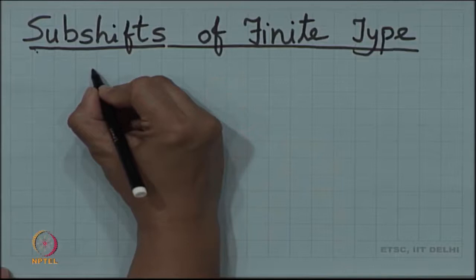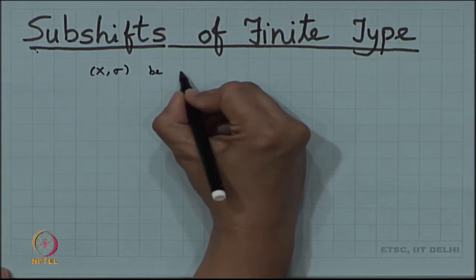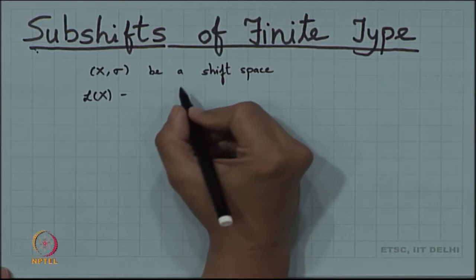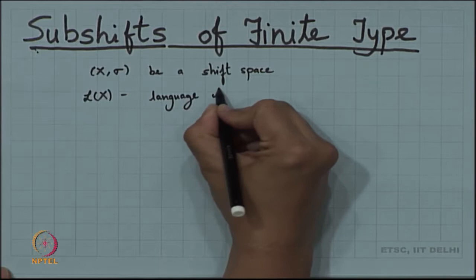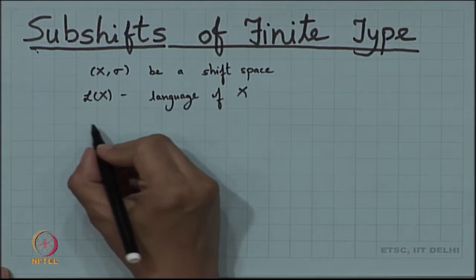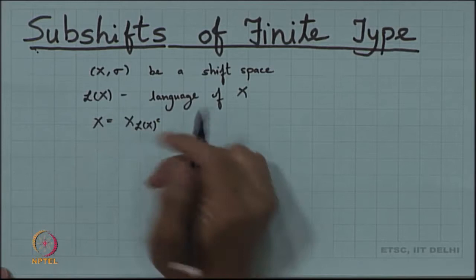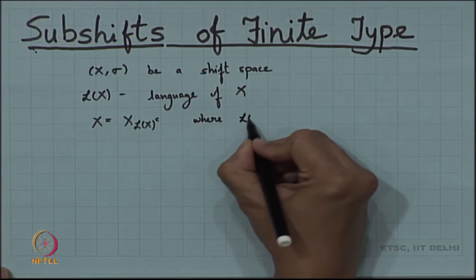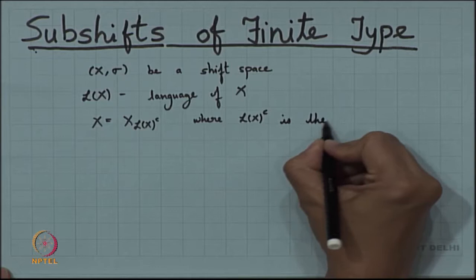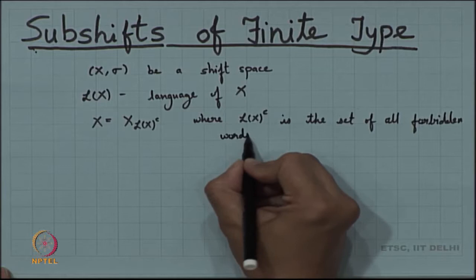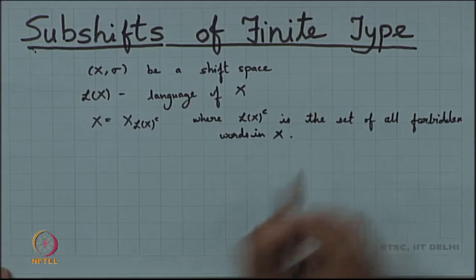Let us recall what we did last time. We had seen that X sigma is a shift space, and we had studied that L(X) is the language of X — all the permissible blocks coming up in sequences of X. We had seen that X can be written as X_{F complement}, meaning the language is good enough to specify what shift space it is, where the language complement is basically the set of all forbidden words in X.